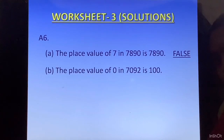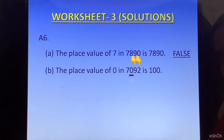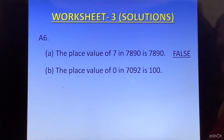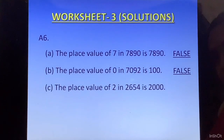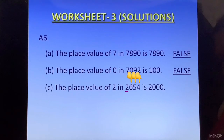Part B: The place value of 0 in 7092 is 100. We take the digit 0 and convert everything to its right to 0 as well, giving 3 zeros — not 100. The place value of 0 is always 0, so this is also false. Part C: The place value of 2 in 2654 is 2000. We take 2 with 3 digits after it converted to 0, giving 2000. So this is true.